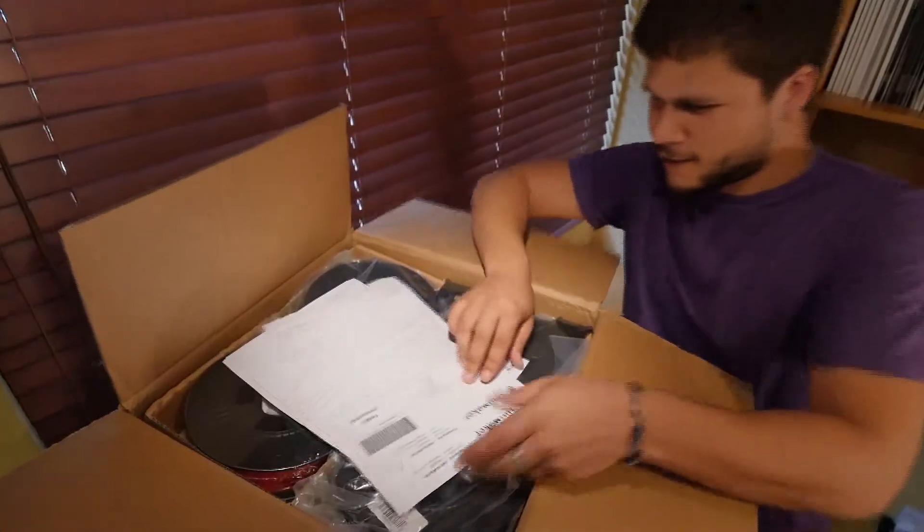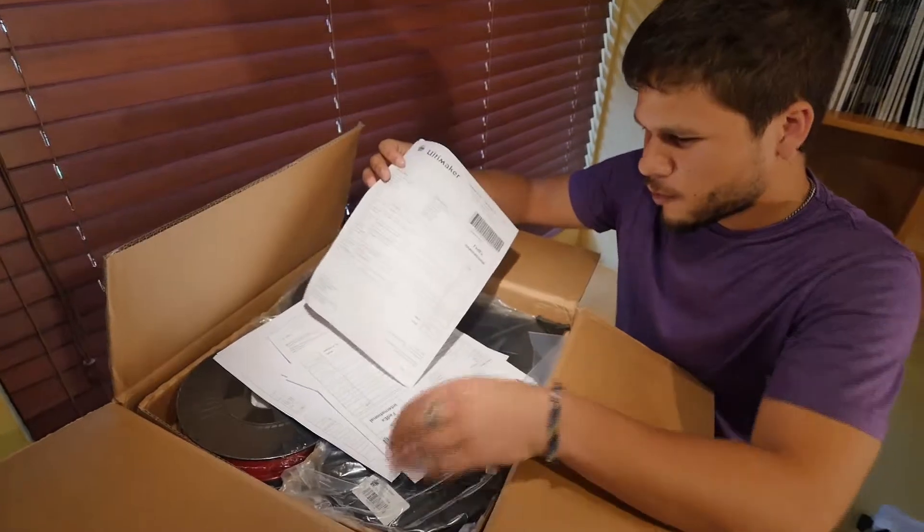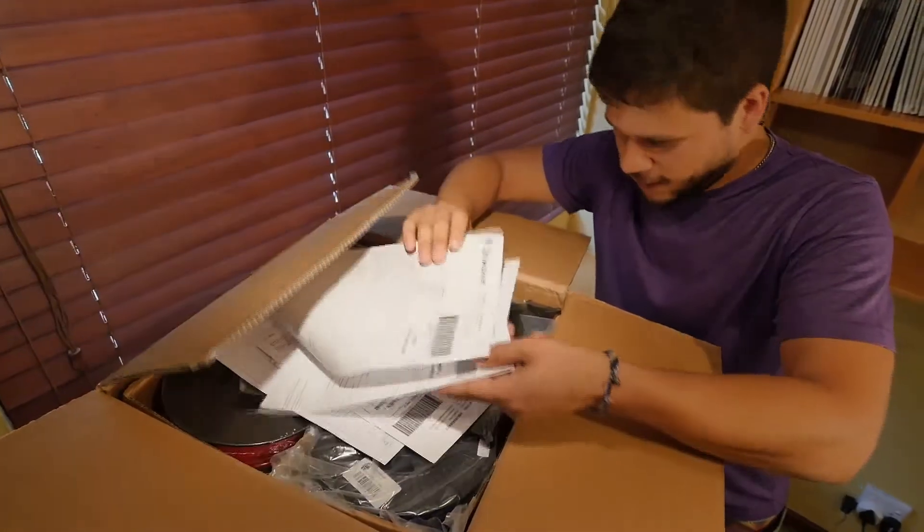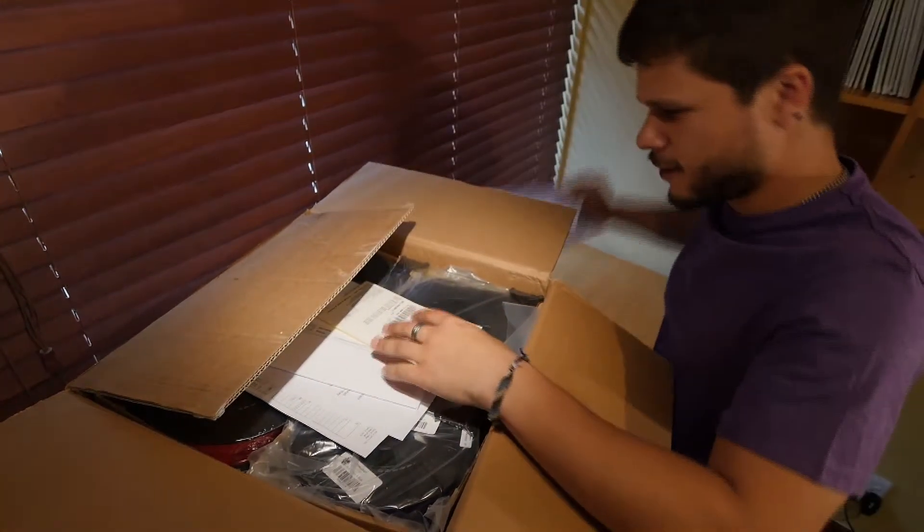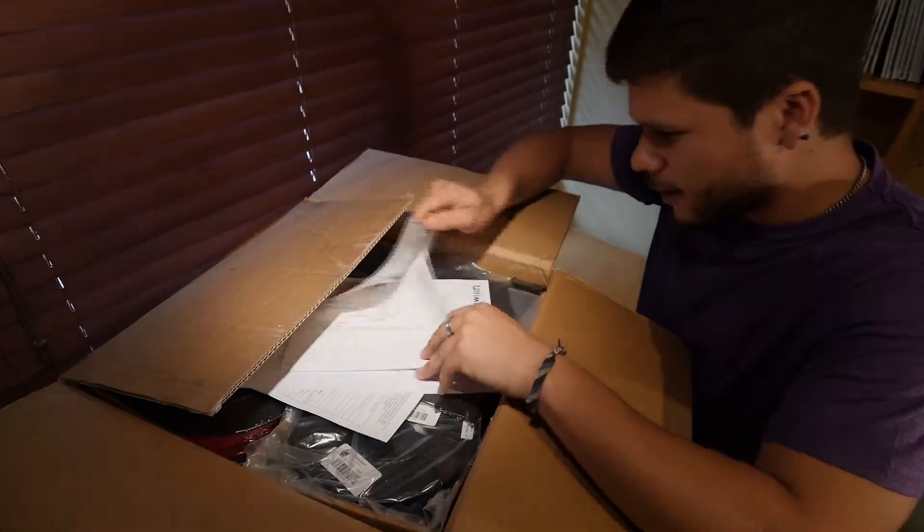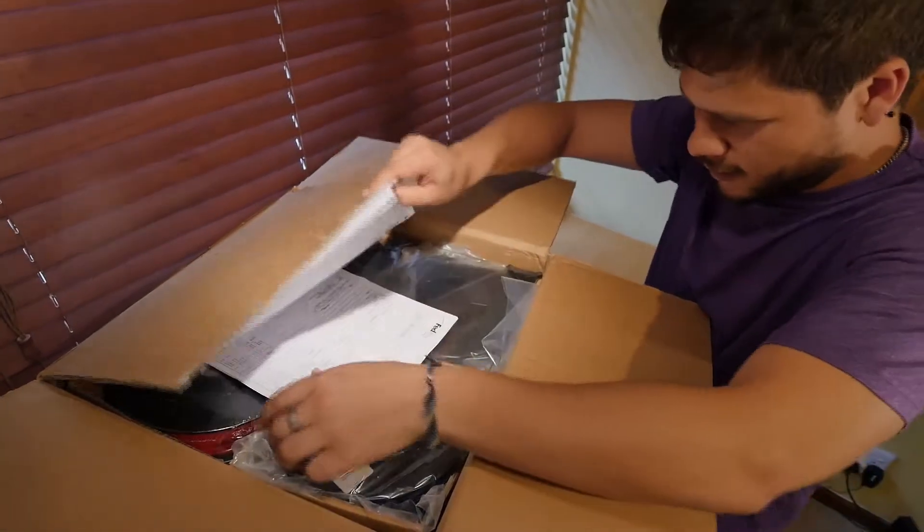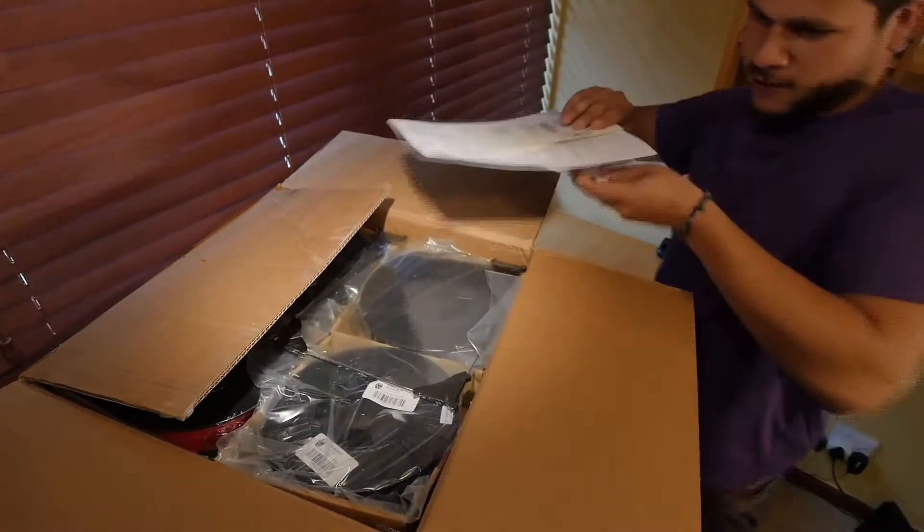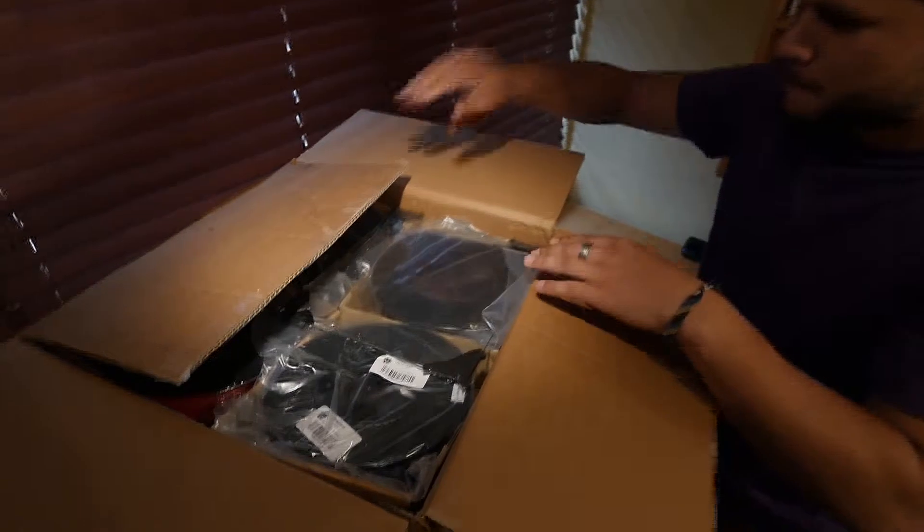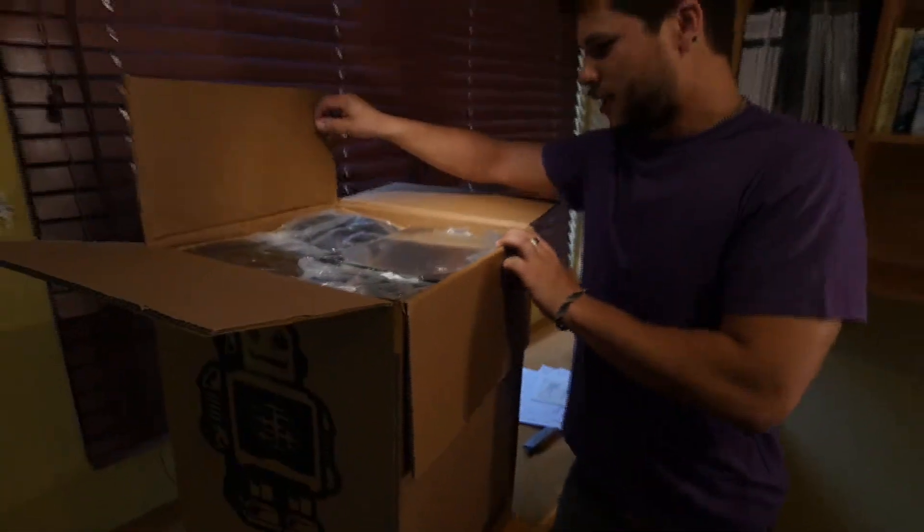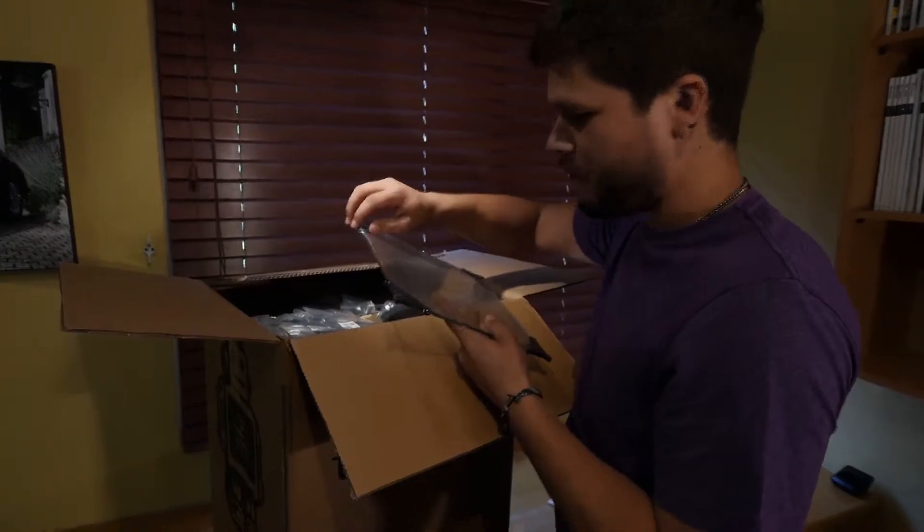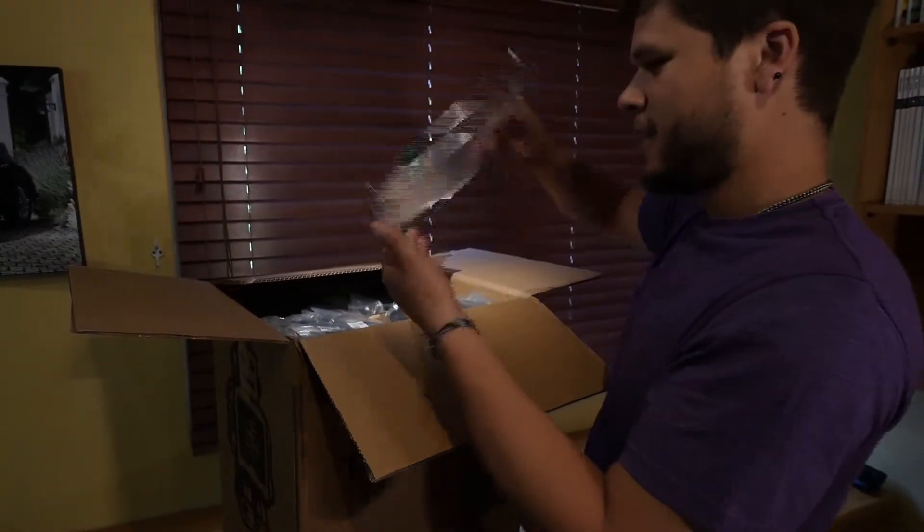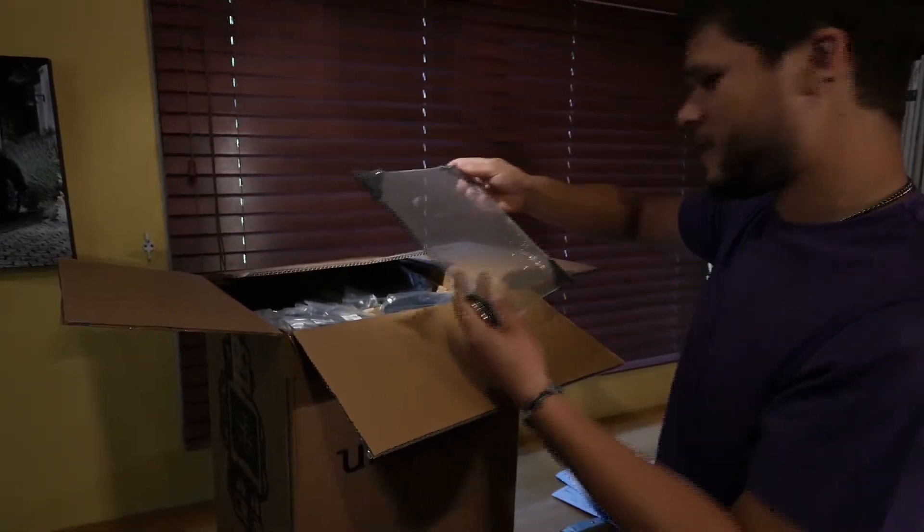So here we can see we've got all our forms from FedEx here, all our invoices and things. Then once we get through this, that's just all the paperwork. Then over here we can see we've got the glass build platform, looks like a really nice quality piece of glass here.